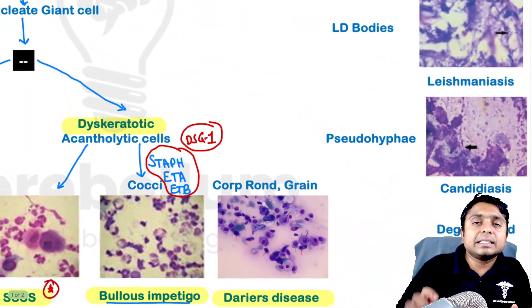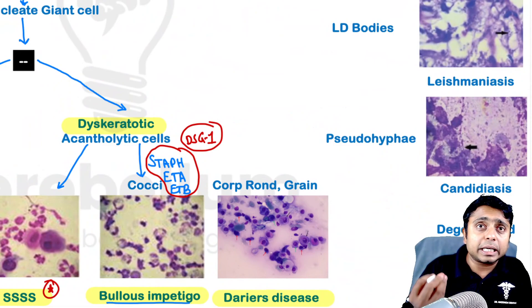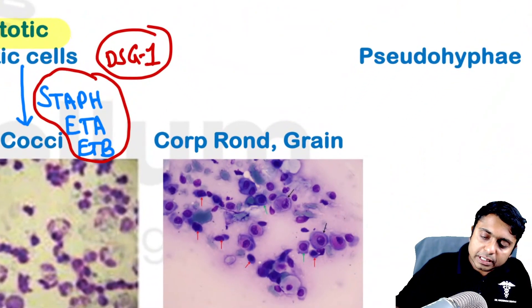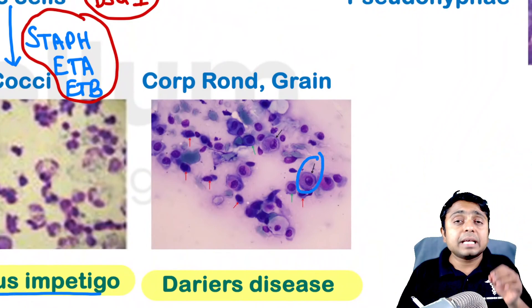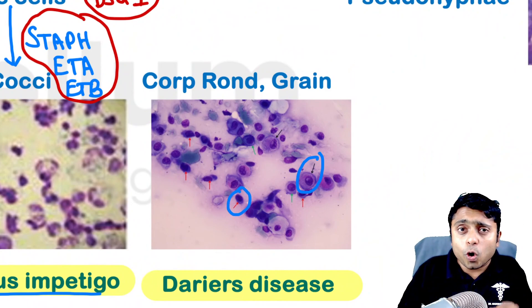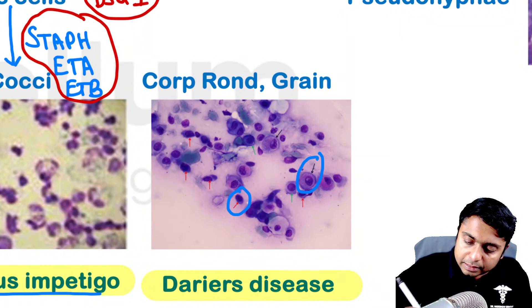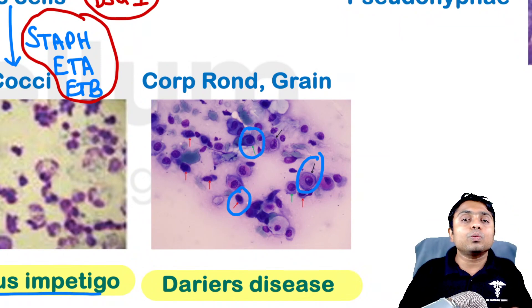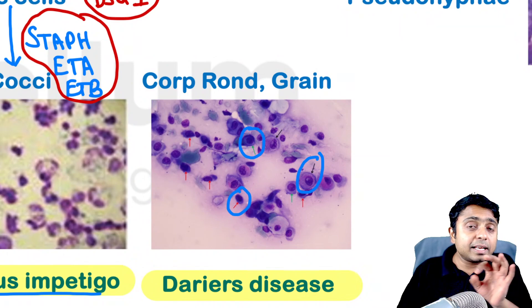Darier's disease is a genetic condition in which we see the presence of corps ronds and corps grains. Observing this image carefully, the black arrow points towards the acantholytic cell in Darier's disease, the red arrows point towards the corps grains (C-O-R-P-S G-R-A-I-N-S), and the green arrows point towards the corps ronds. These are some of the findings related to Darier's disease.